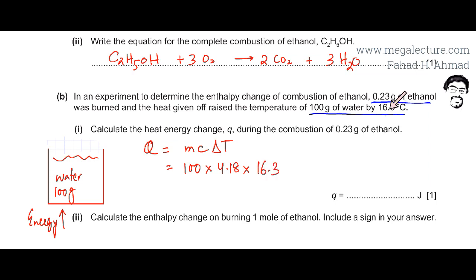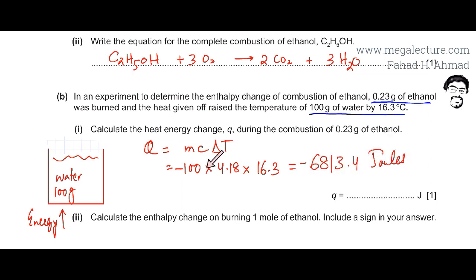You need to be very careful: heat is given off, so it is an exothermic reaction. For an exothermic reaction, you need to add a negative sign to the energy value yourself to indicate it is exothermic. The answer comes out to be −6813.4 joules. This is the amount of energy absorbed by the water when ethanol is burned.